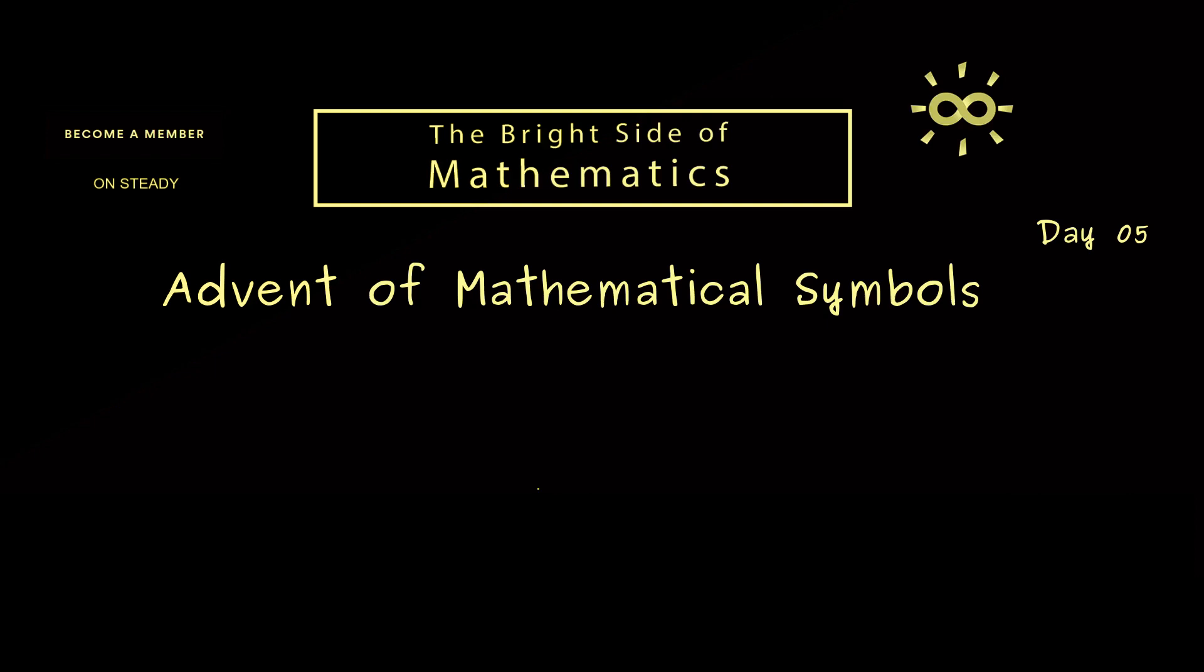The mathematical symbol of today is the gamma function, written with a capital gamma. The variable we put in is usually given by z.